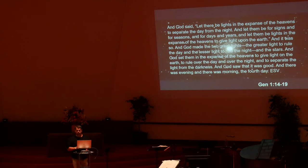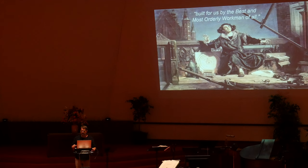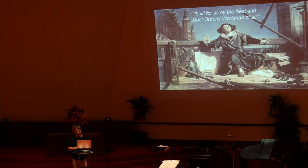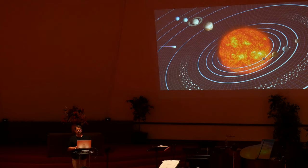Humans have long struggled to explain the precision of the cosmos through various cosmological models. Nicolai Copernicus is responsible for our current model of the solar system and is considered the founder of modern astronomy. He referred to the cosmos as built for us by the best and most orderly workmen of all. Rather than chaos, randomness, and disorder — as one would expect of a universe birthed out of a great cosmic explosion like the Big Bang — we see instead clockwork precision that governs the cosmos at every level.